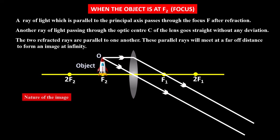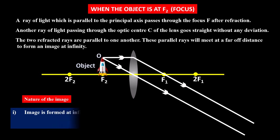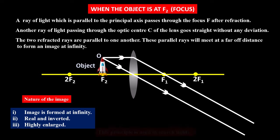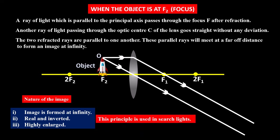The image is formed at infinity. It is real and inverted, and the image will be highly enlarged. This principle is used in search lights.